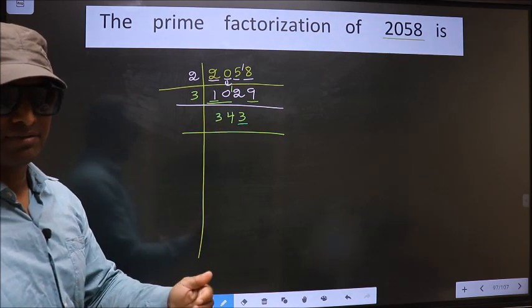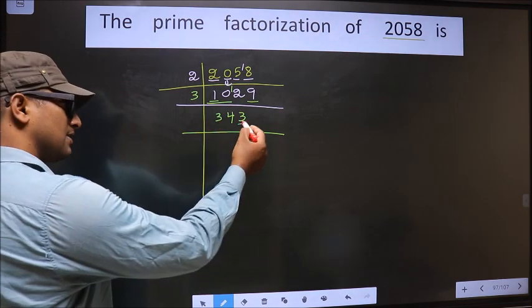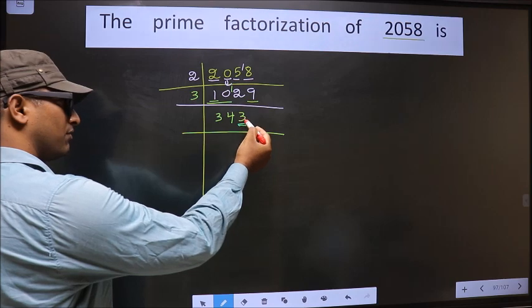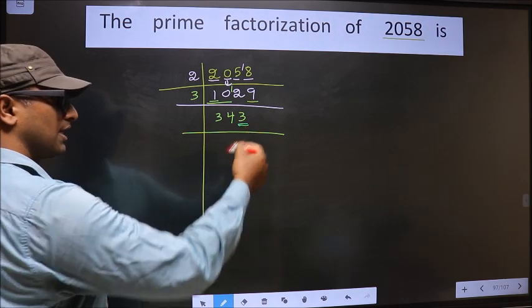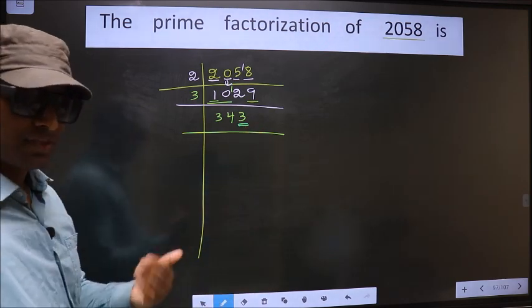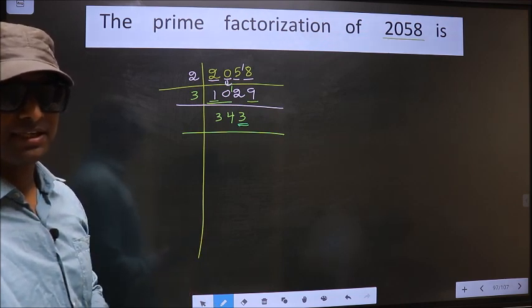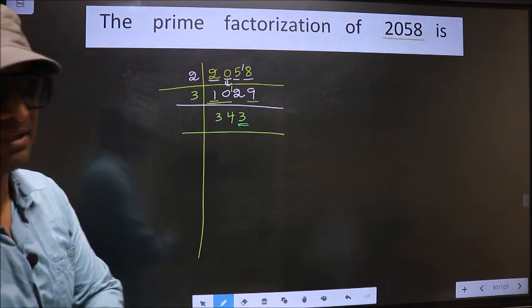Next prime number 5. The last digit is neither 0 nor 5, so this number is not divisible by 5. Next prime number 7, let us check divisibility by 7.